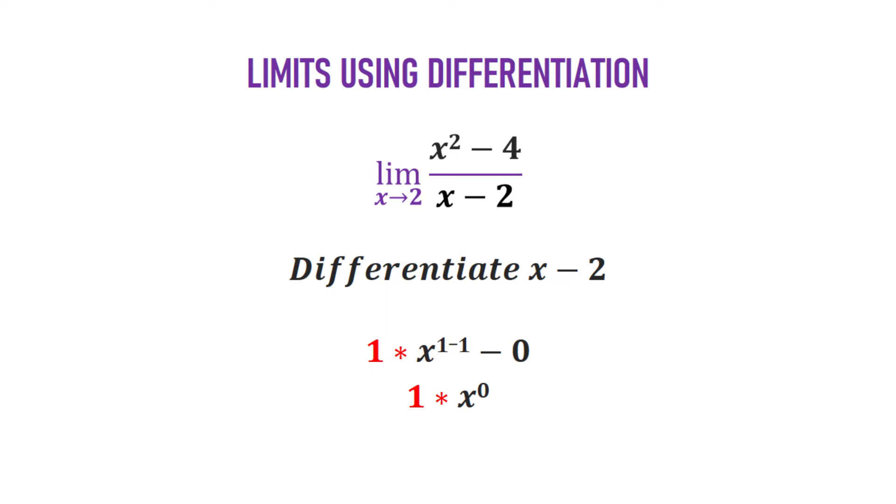Now, try the same thing for the denominator, which is x minus 2. Then we have 1, right? 1 is the power of x in this case. It comes down to multiply x. It becomes 1x. Then you subtract 1 from the power. 1 minus 1 is 0. Then anything to the power 0 is 1, right? So, 1 times 1 is 1. In the end, we have 2x all over 1. And now we can see that the discontinuity is gone. Now, let's put x as 2. Here we get 4.